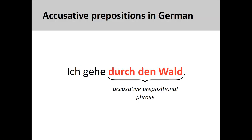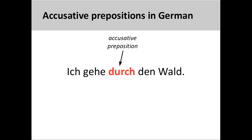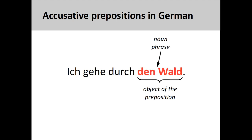In an earlier presentation, we saw that an accusative prepositional phrase has two parts. The first part was the preposition itself. The second part was the object of the preposition, which was in the accusative case. Here the object of durch, meaning 'through,' is the noun phrase den Wald, 'the forest,' with the definite article den indicating the accusative case.